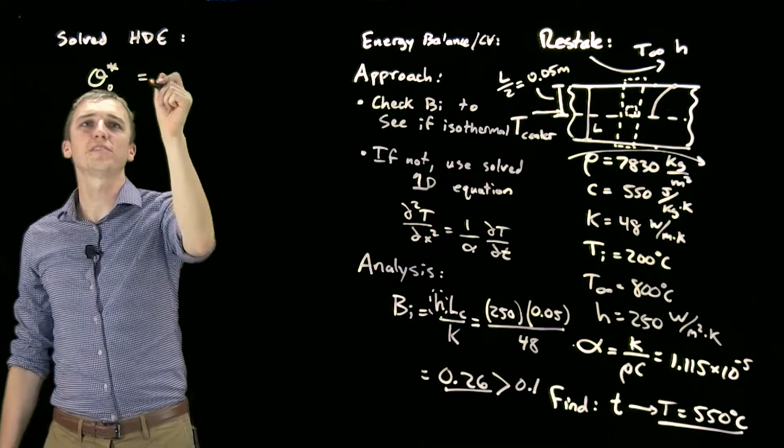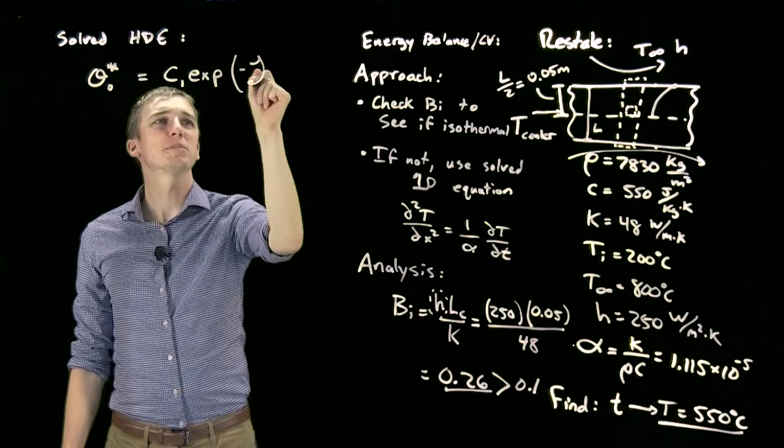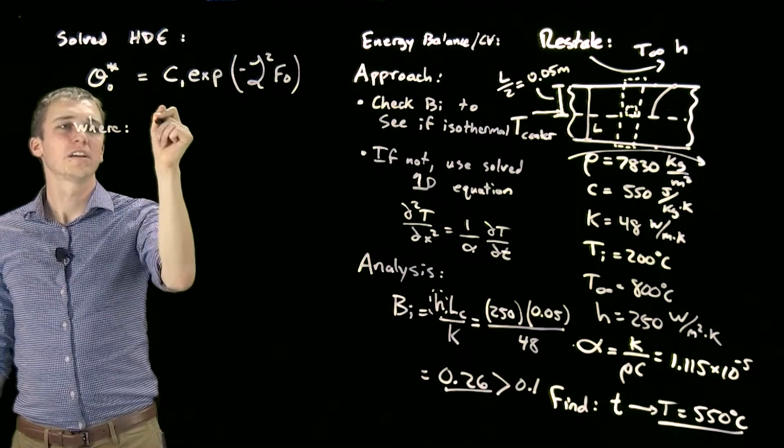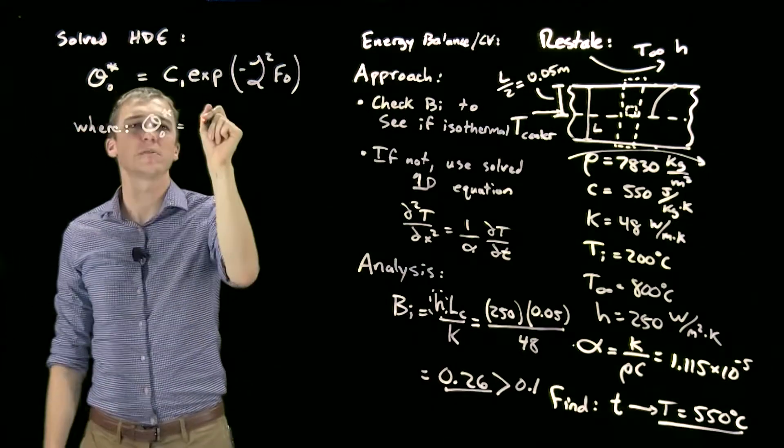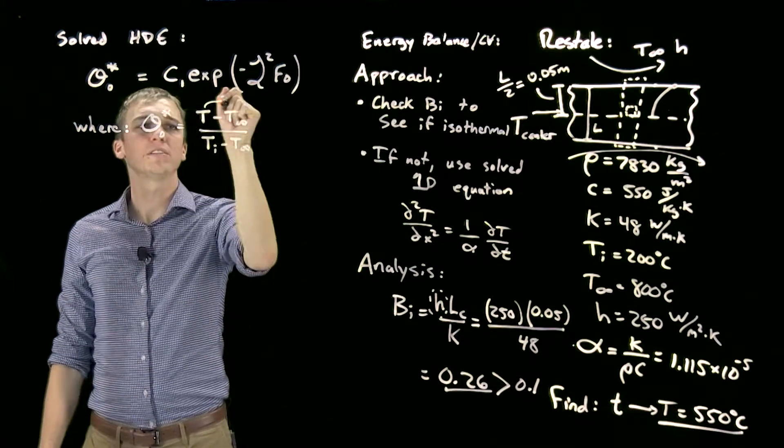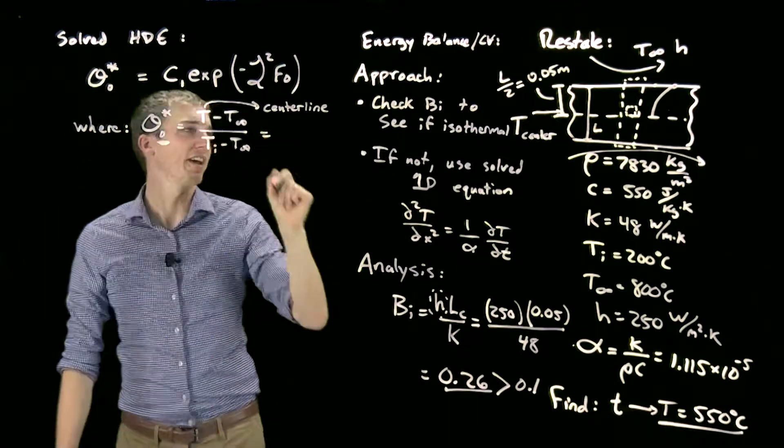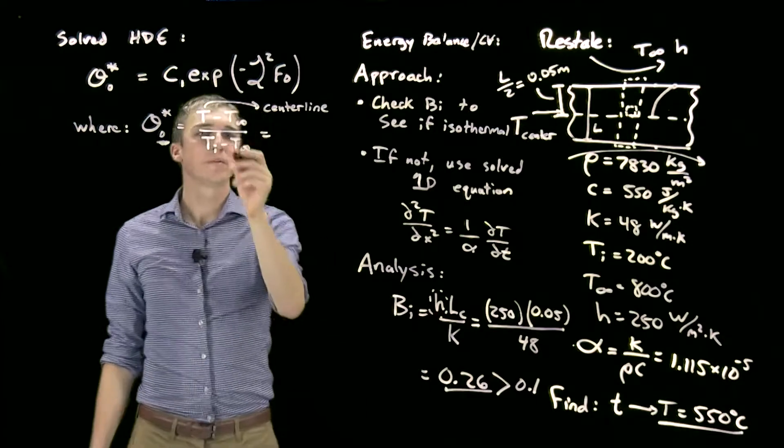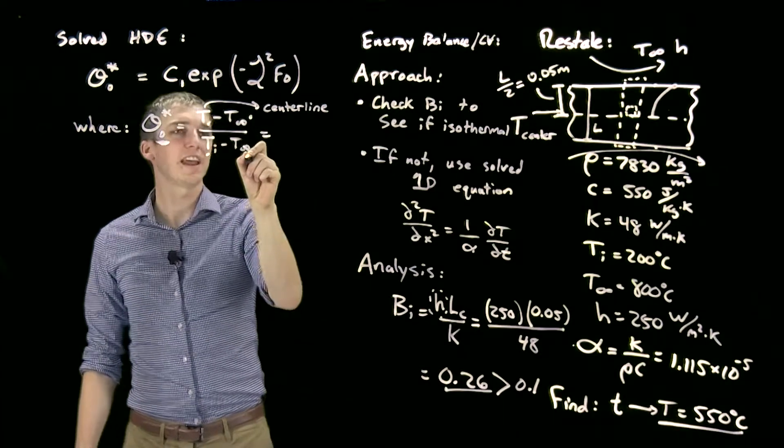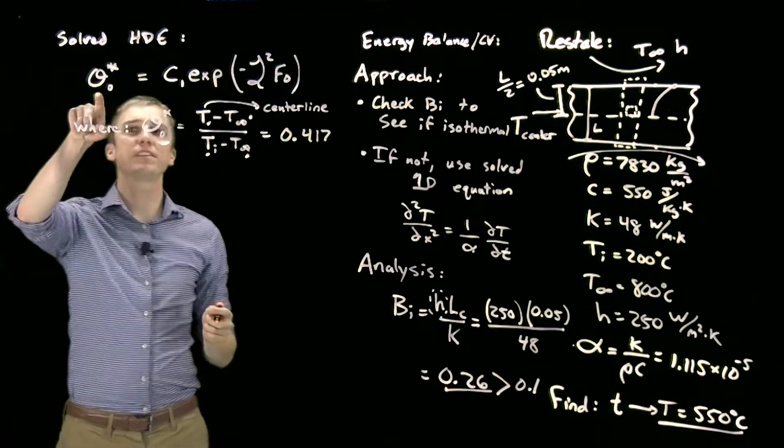We get that out of the book. We're going to start by writing an equation for θ₀*. This is supposed to be a zeta, which I can't do, so we're going to make it kind of squiggly. θ₀* = (T - T∞)/(T_i - T∞), where we use the temperature of the centerline. This zero specifically represents the temperature of our centerline, in other words what we are looking for. Plugging in the value we want, 550 here, our T∞ = 800 here, our T_i = 200 here, and again T∞ = 800, we get θ₀* = 0.417.